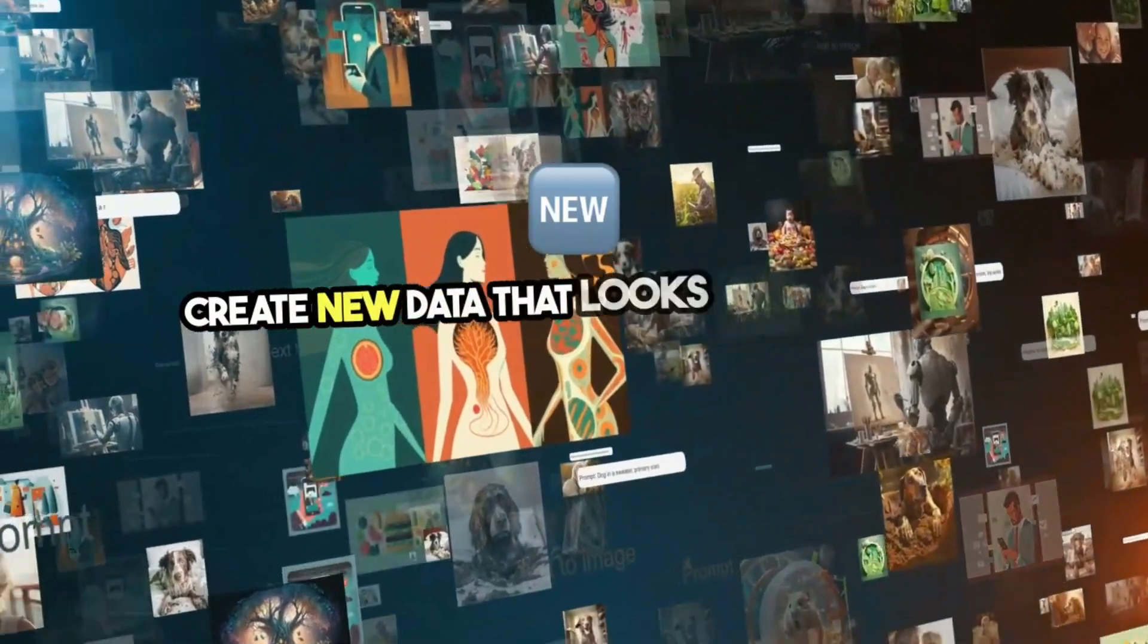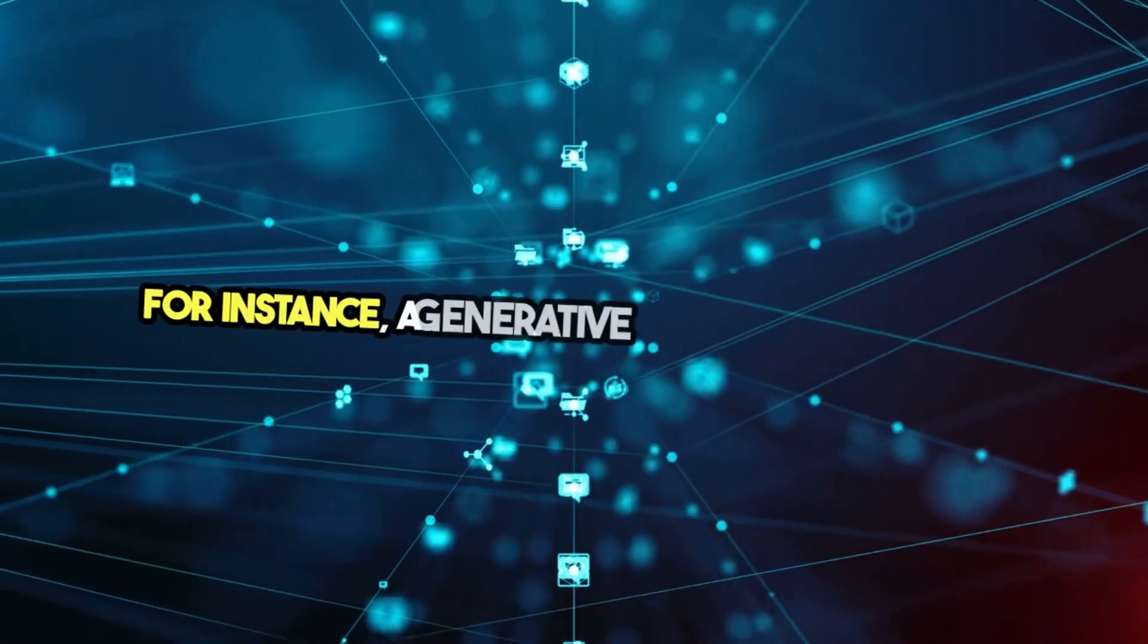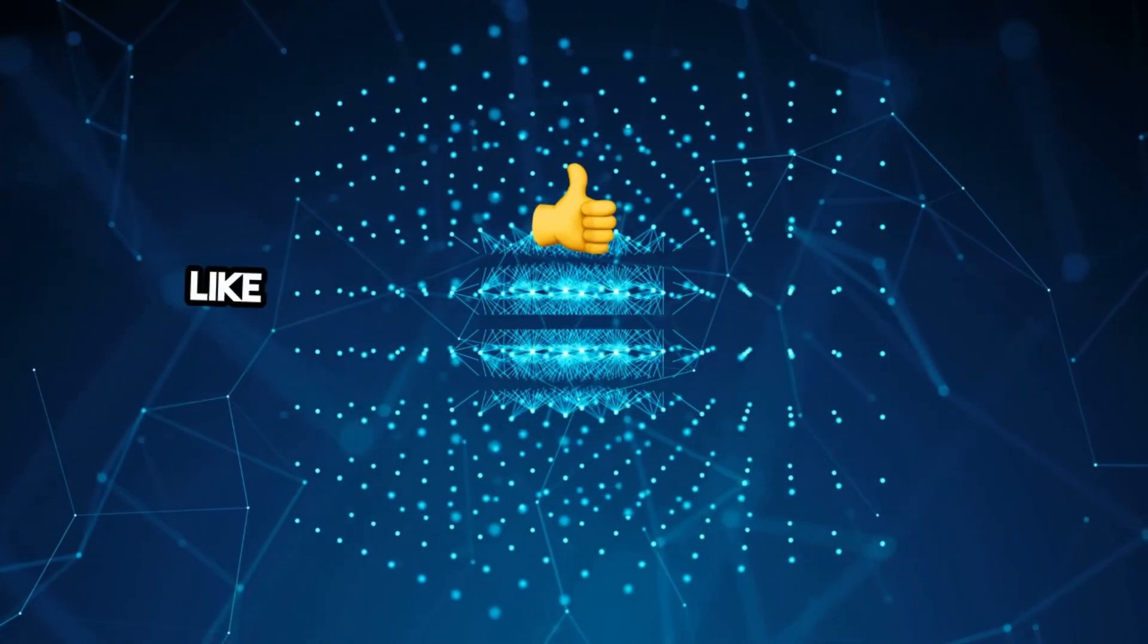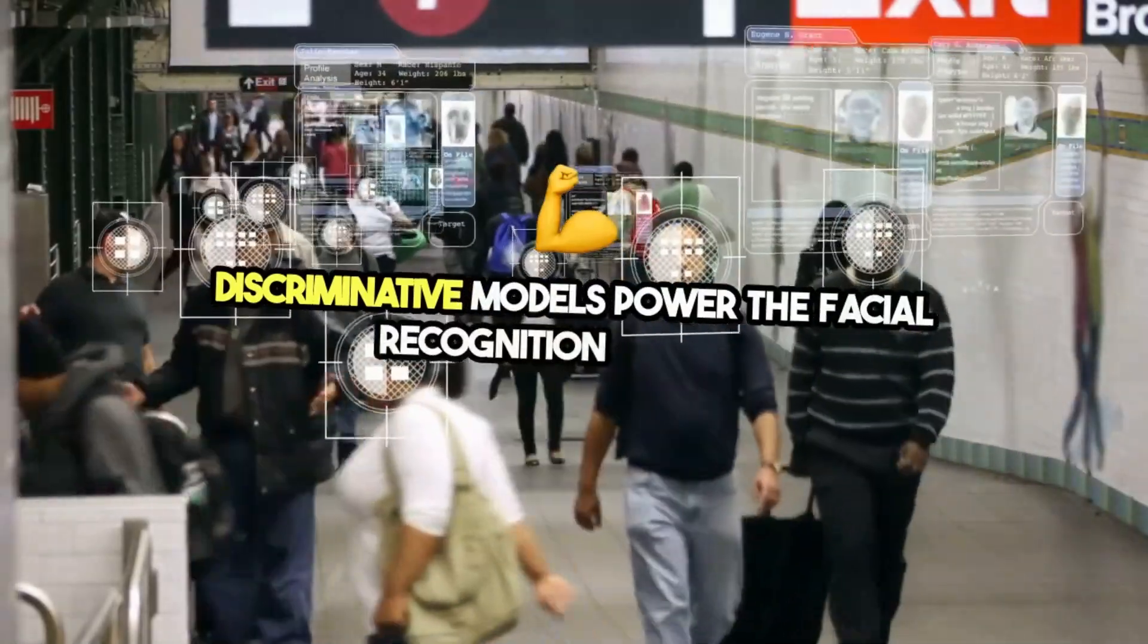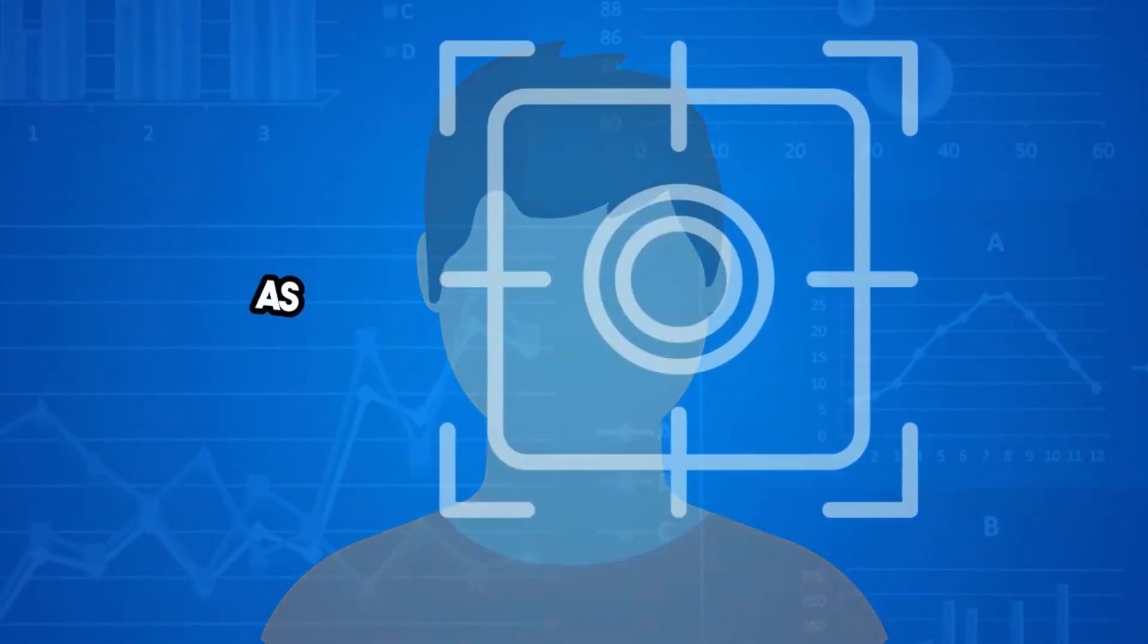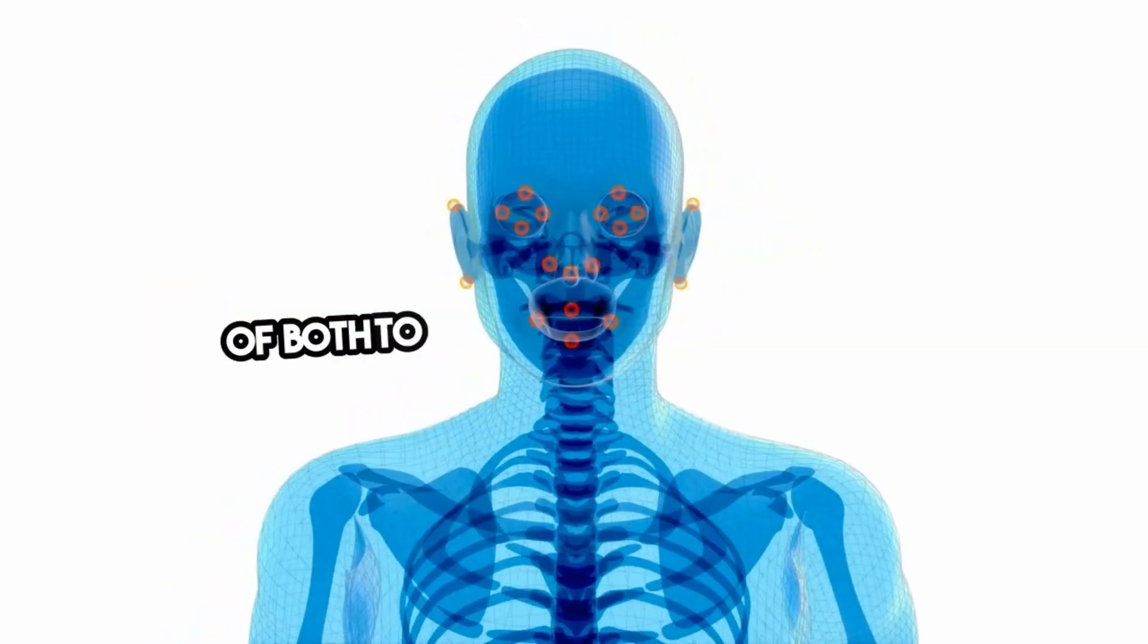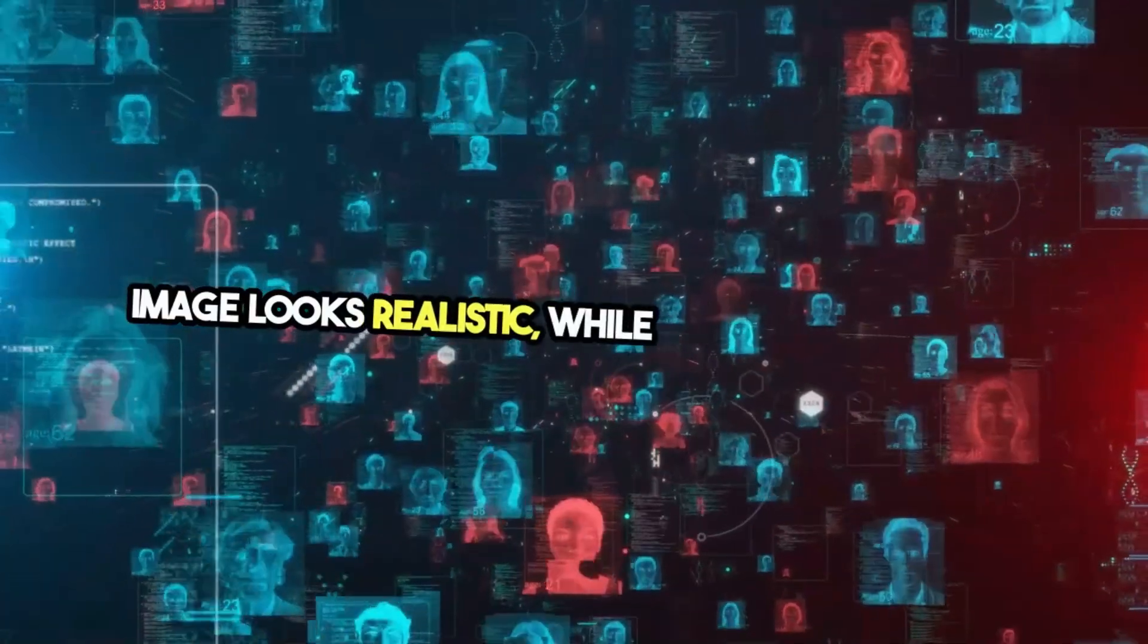On the other hand, generative models learn to model the actual distribution of data, which allows them to create new data that looks similar to the original. Instead of just classifying inputs, generative models can generate entirely new outputs. For instance, a generative model could create realistic images of faces, even though those faces don't exist in the real world. These models are also used to generate human-like text, compose music, and even create artwork. We see these models in action all around us. Discriminative models power the facial recognition systems on our phones, identifying whether it's your face that unlocks the device. Generative models are behind AI-generated artwork, text, and even deepfake videos that simulate realistic scenes. As AI continues to evolve, the line between discriminative and generative models is blurring. Many modern applications use a combination of both to achieve incredible results. For example, in AI-driven art, a discriminative model might evaluate whether a generated image looks realistic while a generative model creates the image.